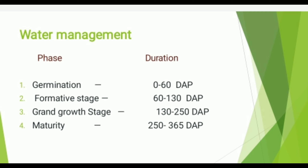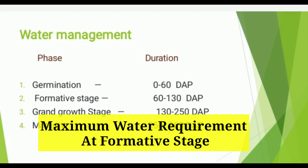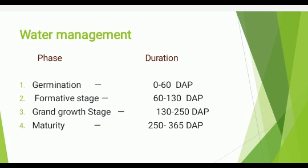Water Management: Germination phase — 0 to 60 days after planting. Formative stage — 60 to 130 days after planting. Grand growth stage — 130 to 250 days after planting. Maturity phase — 250 to 365 days after planting.